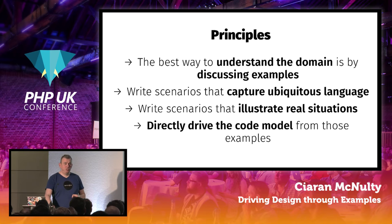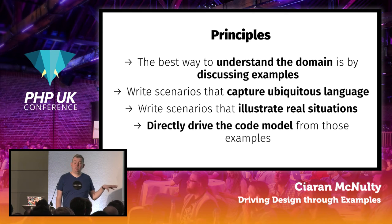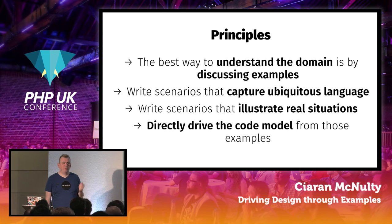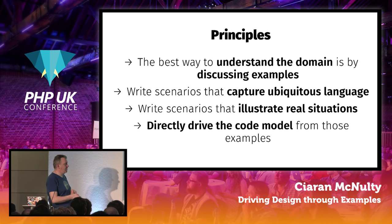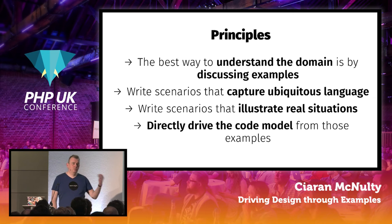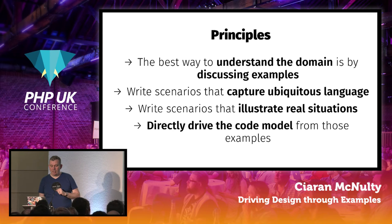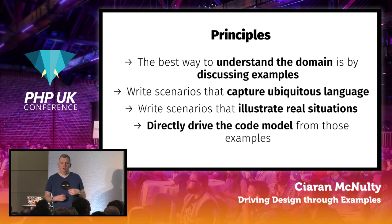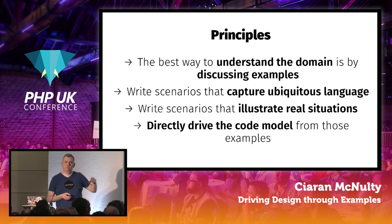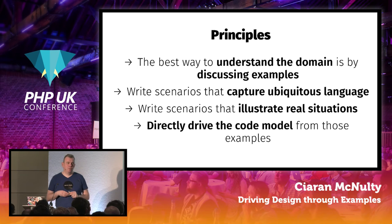We're going to write scenarios that deliberately capture ubiquitous language. The scenarios I showed earlier were fine for doing a lot of BDD and automated testing afterwards, but they weren't really focused on understanding how the business talks about things. The scenarios should illustrate real situations — as much as possible, get real data and real detail in there. Then directly drive the way you write the code from the examples. A lot of people generate examples, write the code, then use the examples to generate automated tests. We're going to directly drive the code model in a much tighter loop, similar to test-driven development.